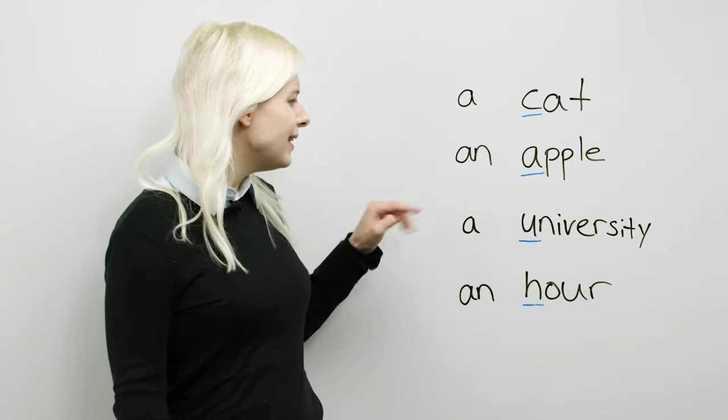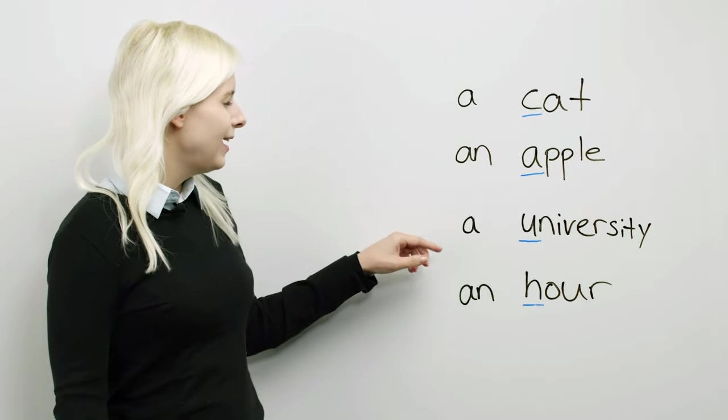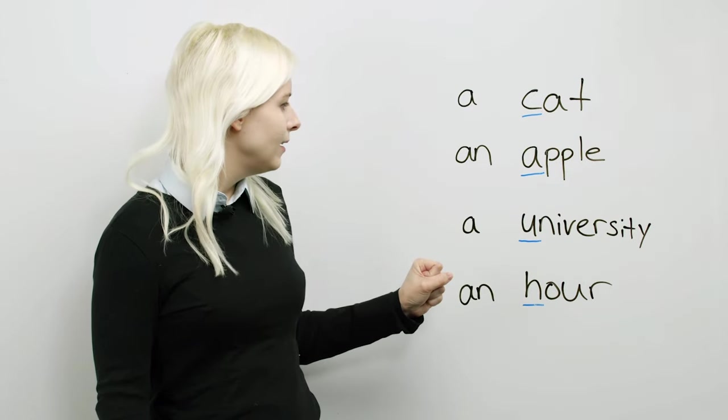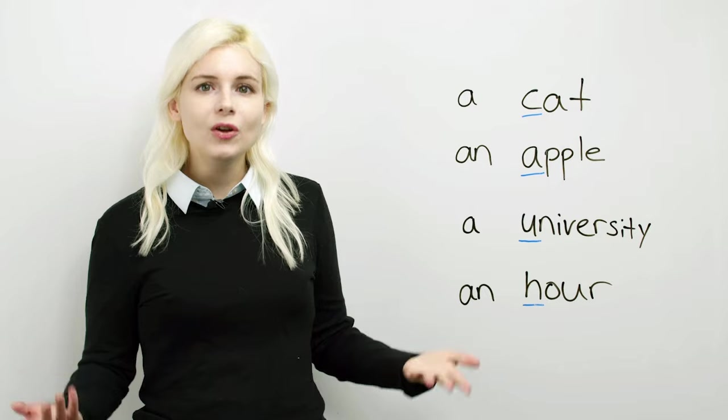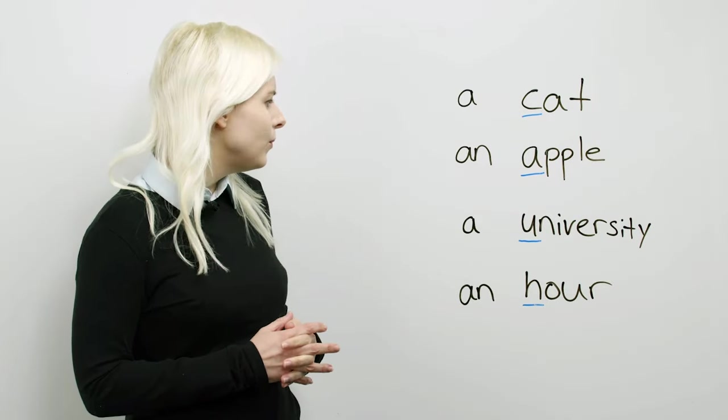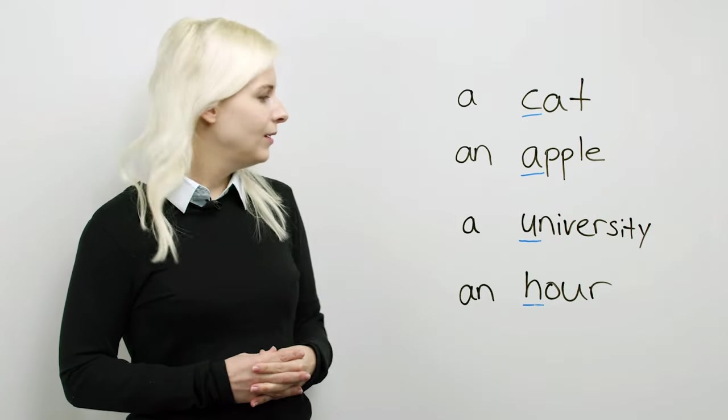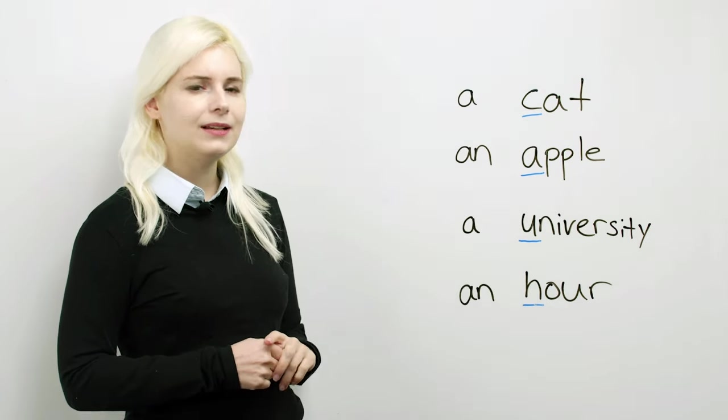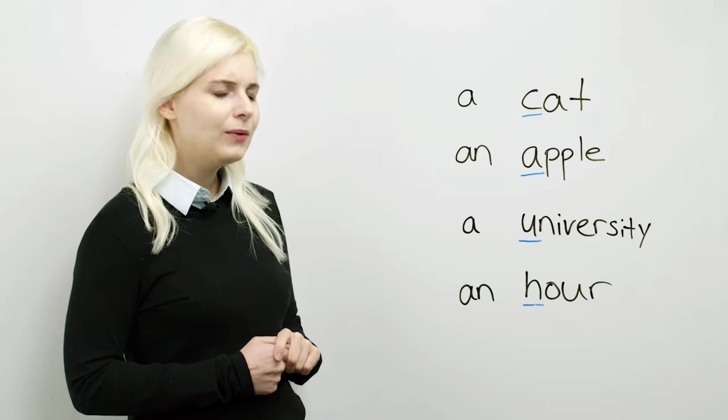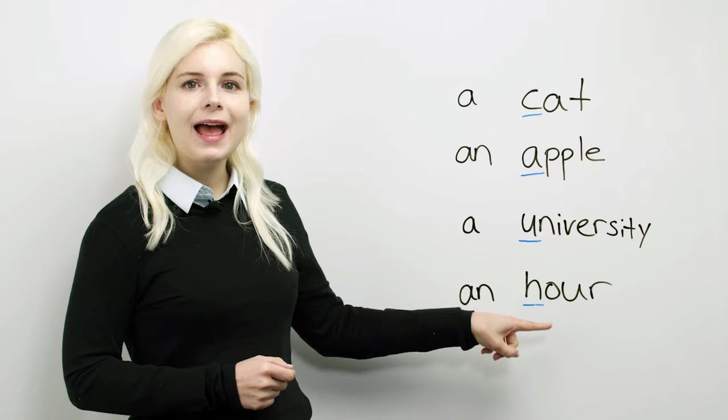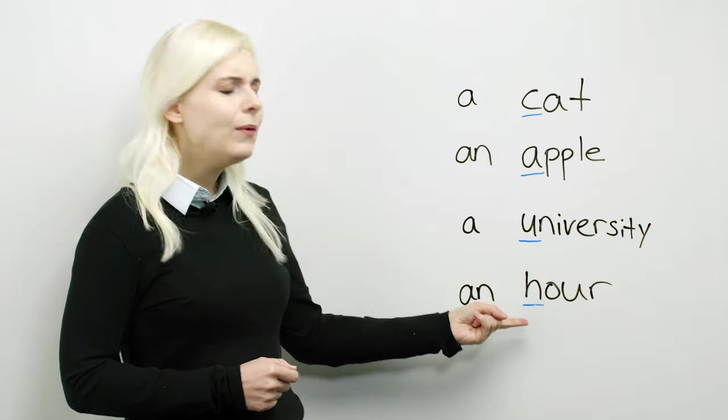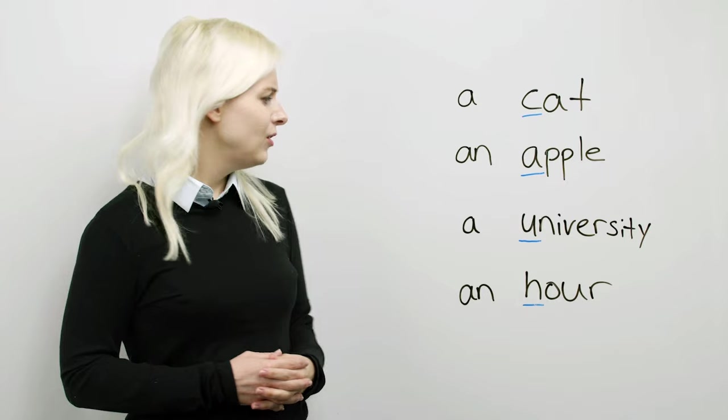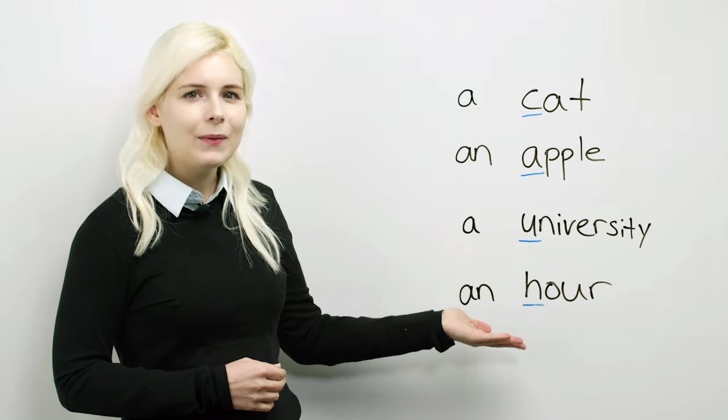Now, let's look at these two. A university. University starts with a U, so U is a vowel. Why does it go with a? A university. And what about this one, an hour? Hour starts with an H and H is a consonant, so why is it an hour?